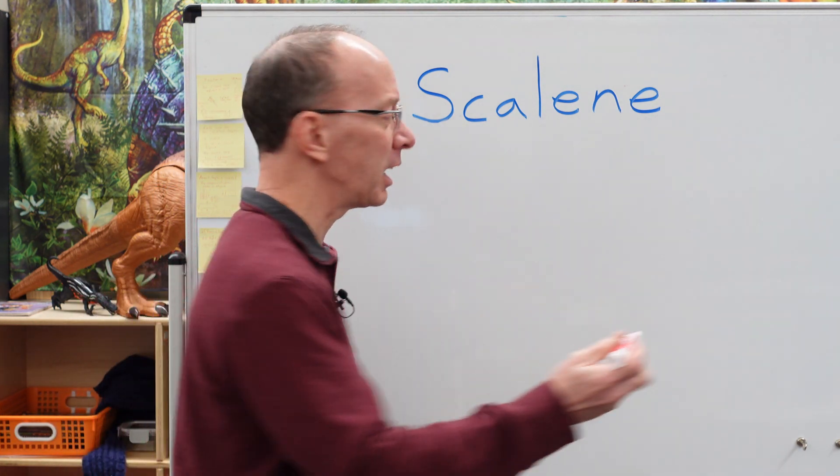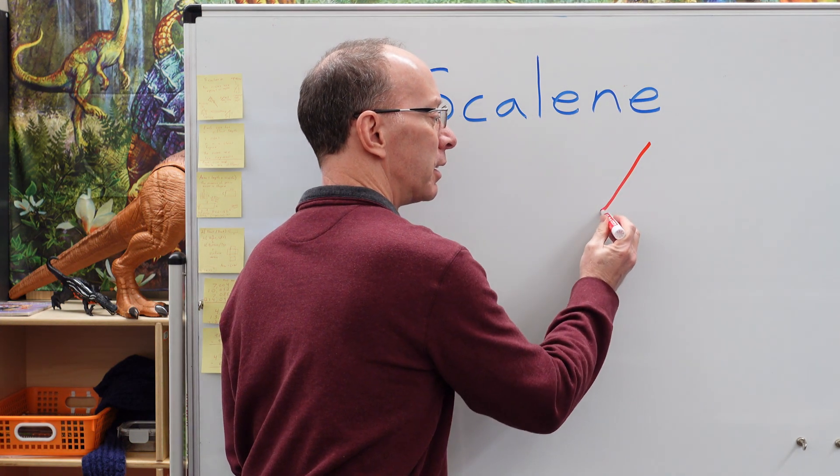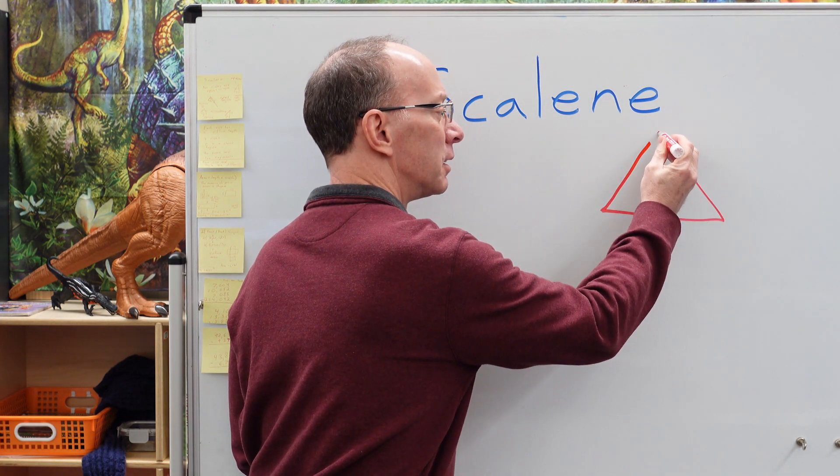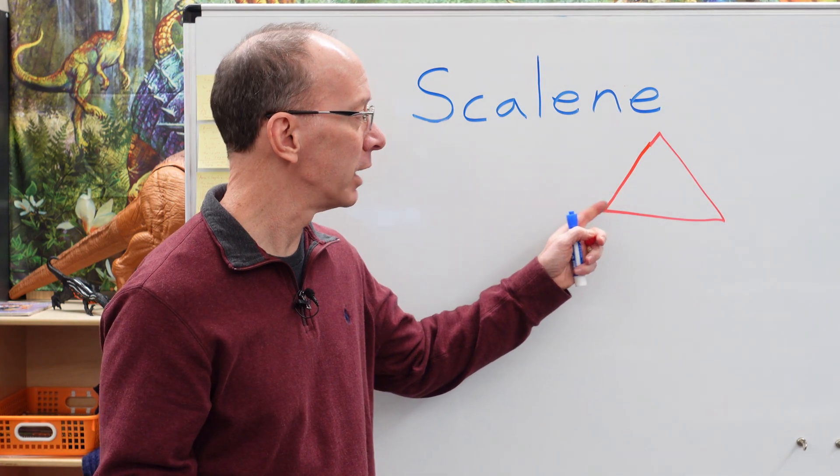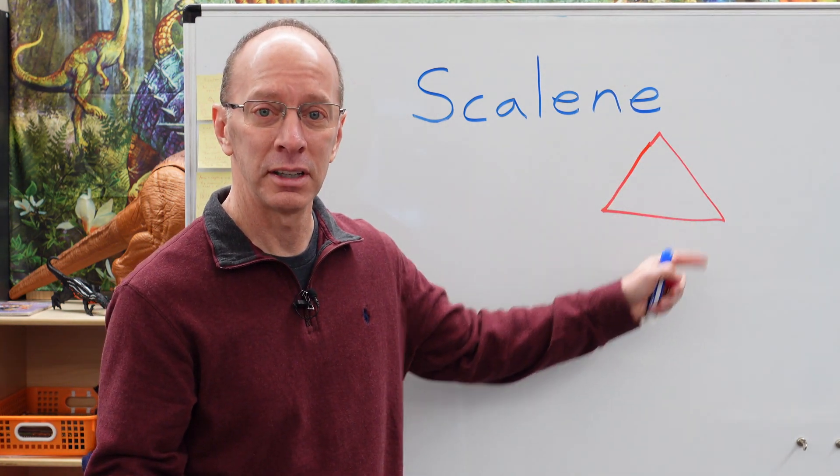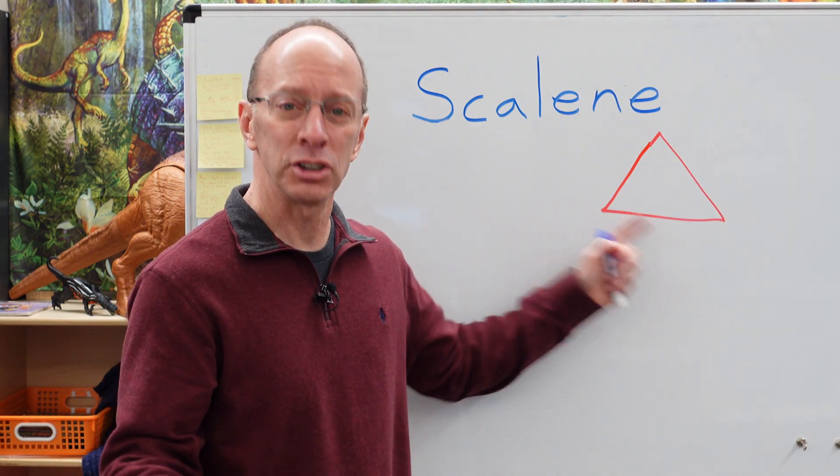Triangle has three sides, just like this. This is a triangle. Three sides. All right. Three line segments. It's a closed shape. Triangle.